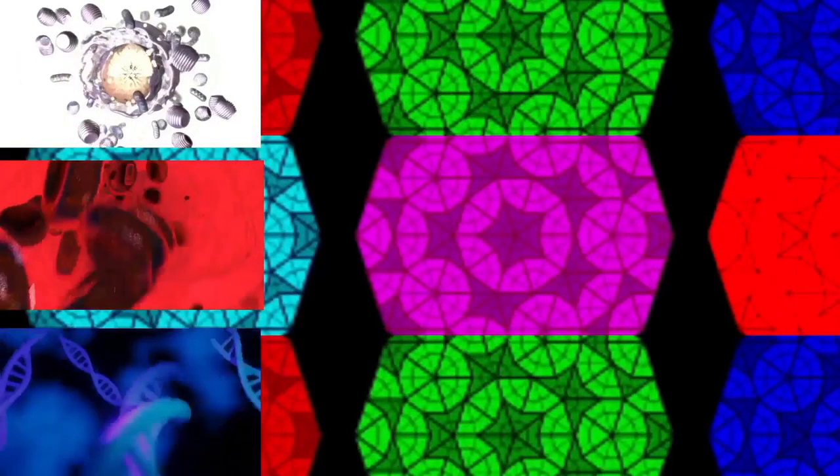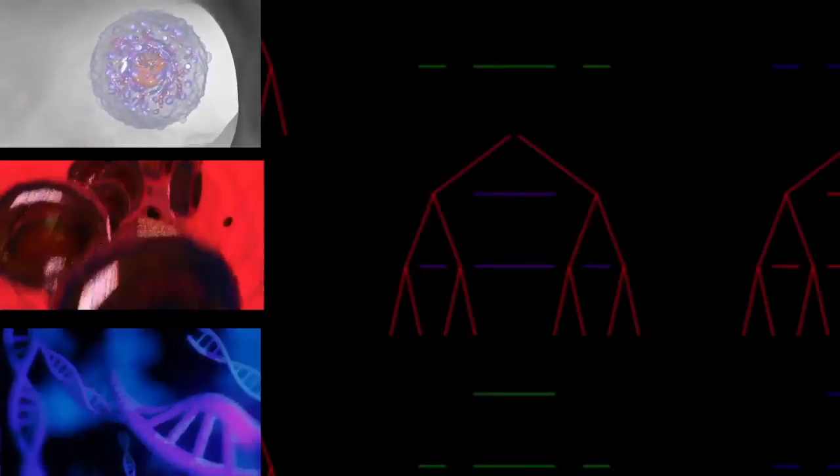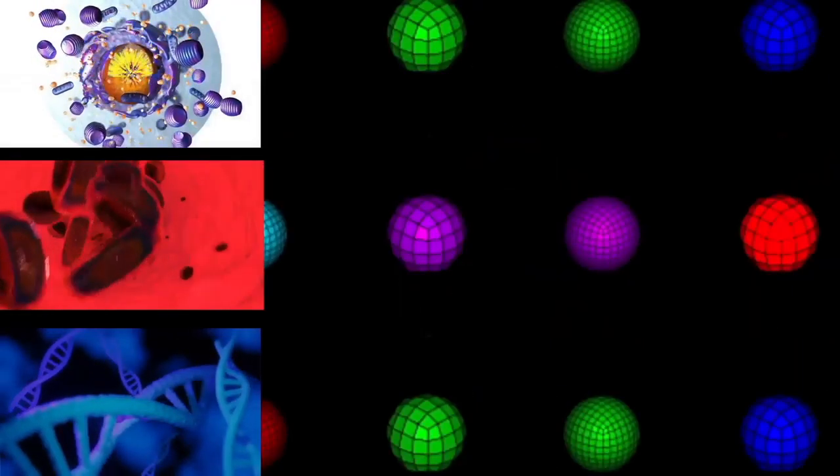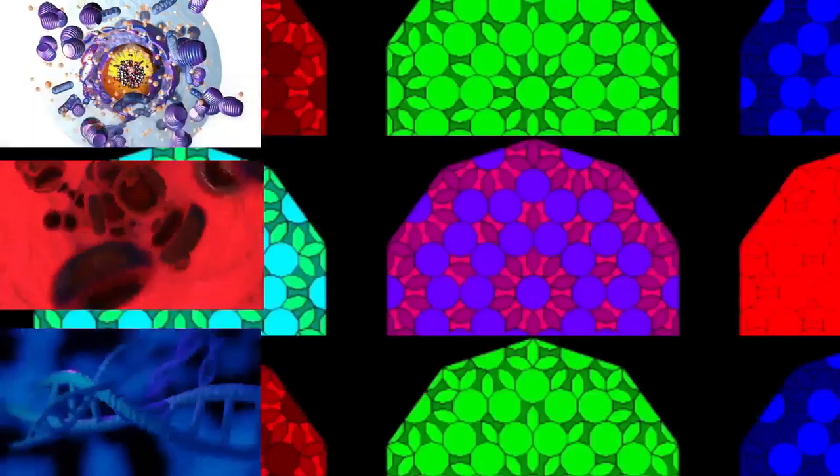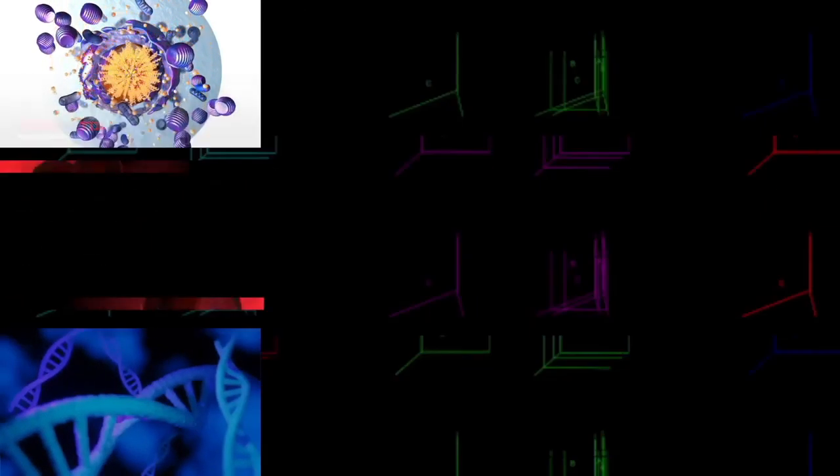Prokaryotes lack mitochondria and chloroplasts. Instead, processes such as oxidative phosphorylation and photosynthesis take place across the prokaryotic cell membrane. However, prokaryotes do possess some internal structures such as prokaryotic cytoskeletons.